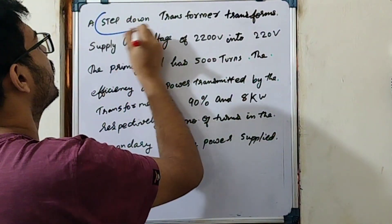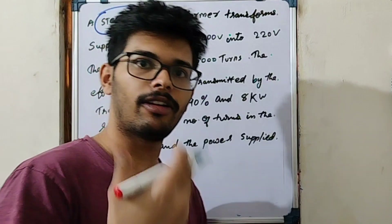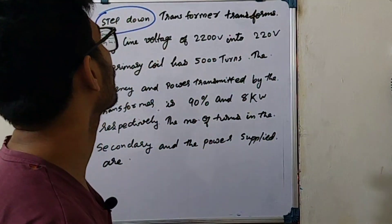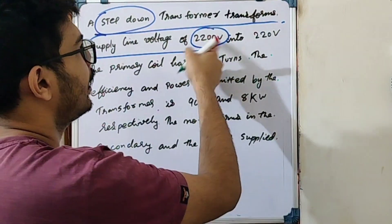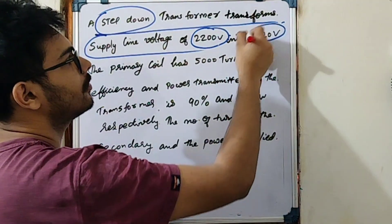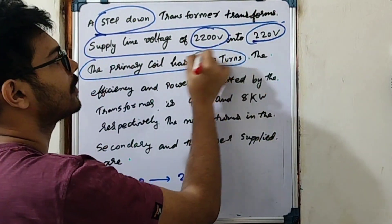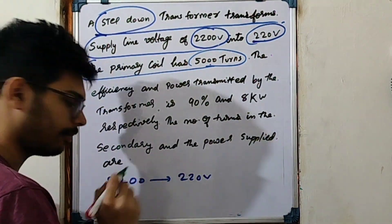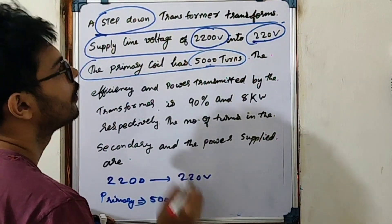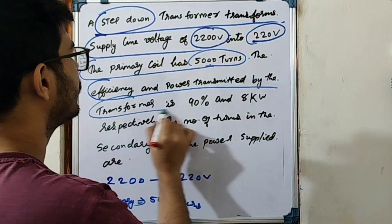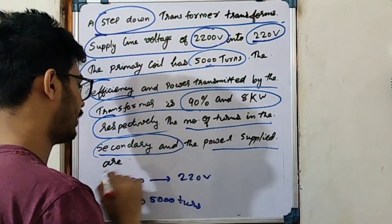What is a step-down transformer? A step-down transformer converts high voltage to low voltage — typically 20 to 30 volts output. The primary coil is the input coil and has the highest number of turns. The efficiency of power transmitted by the transformer is 90%.